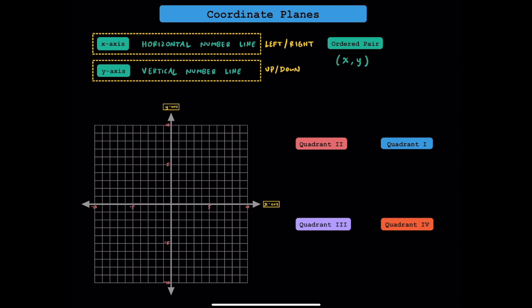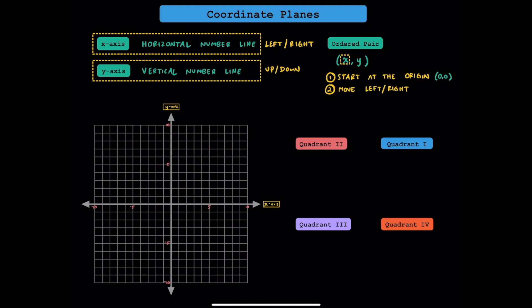Here's how to plot ordered pairs in three easy steps. Step one: start at the origin. The origin is located at (0, 0), where the x-axis and y-axis meet. Step two: move either left or right along the x-axis — to the right if x is positive, or to the left if x is negative. And in step three, move either up or down along the y-axis — up if y is positive, and down if y is negative.